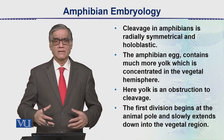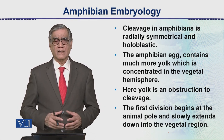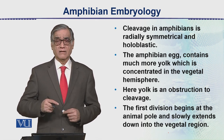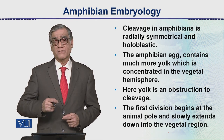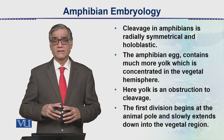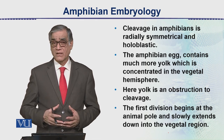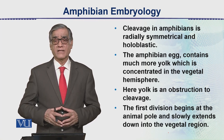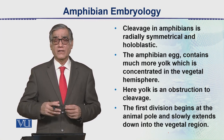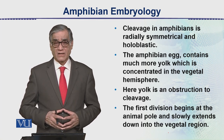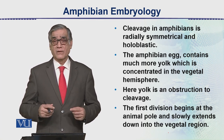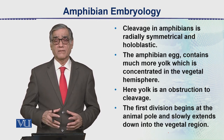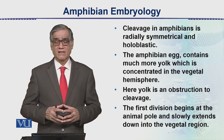Then, in water, the cleavage starts. There is an animal pole and a vegetal pole. At the animal pole, the nucleus is present, whereas at the vegetal pole there is yolk. Cell division is very slow at the vegetal pole but very quick at the animal pole.